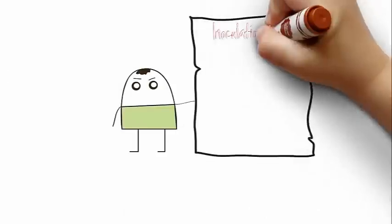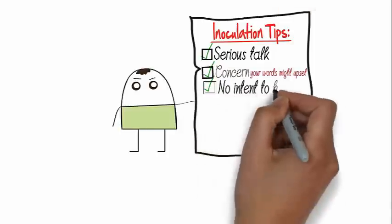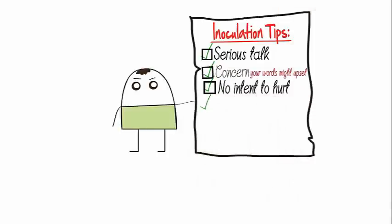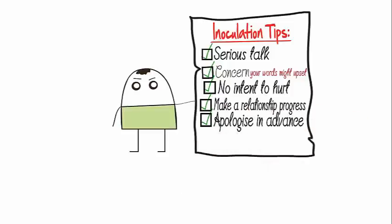Here's a big inoculation. It goes like this. Sarah I want to have a serious conversation with you and I'm concerned that what I'm about to say will upset you or offend you. I want you to know that it's not my intention. I want to move our relationship forward so I'm going to say what I have to say and if I offend or upset you I'm apologizing in advance. Is that okay with you?